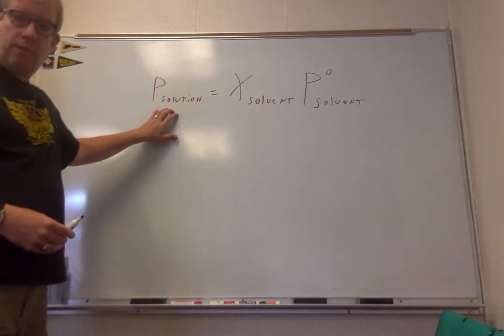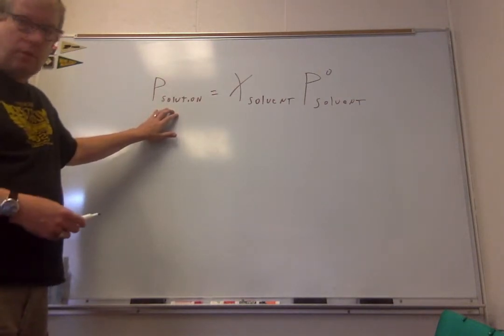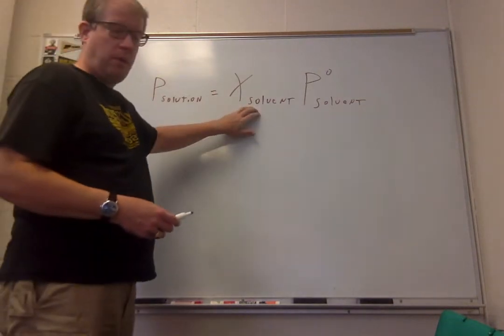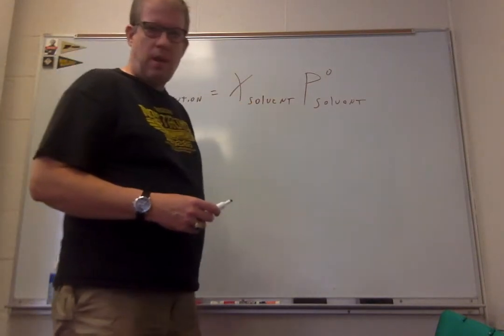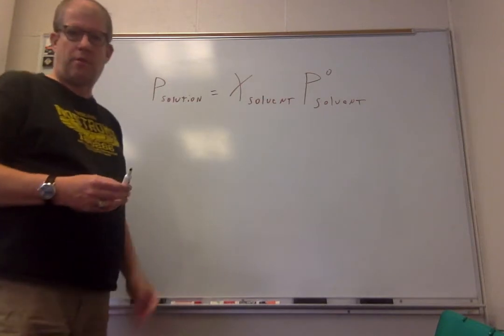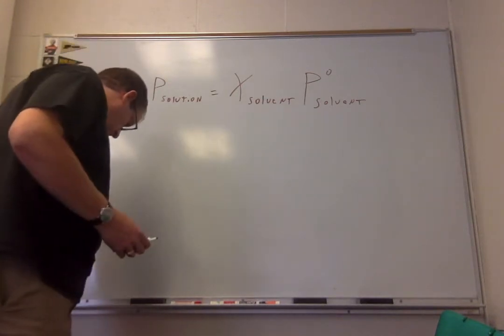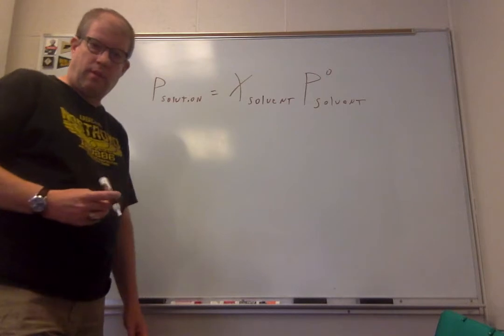We have the pressure of the solution of interest that we're looking for is equal to the mole fraction of the solvent, not the solute, times the normal vapor pressure of the solvent, which is going to be the 23.76 torr.